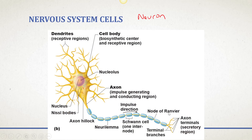Nodes of Ranvier are spaces between Schwann cells. Then we have the axon terminals, which are going to secrete neurotransmitters when signaled. When the signal is received and accumulates at the axon hillock and reaches a threshold, the nerve impulse will fire. Once the nerve impulse gets to the axon terminals, calcium will enter in, and that will lead to the release of neurotransmitters from the end of the neuron.